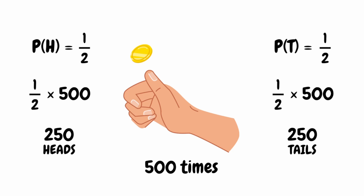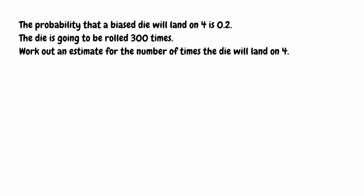Let's take a look at some practice questions. For this first question, the probability that a biased die will land on 4 is 0.2. The die is then rolled 300 times. We need to work out an estimate for the number of times the die will land on 4. To get our expected frequency, we take the probability of 0.2 and multiply that by the total number of rolls, which is 300.